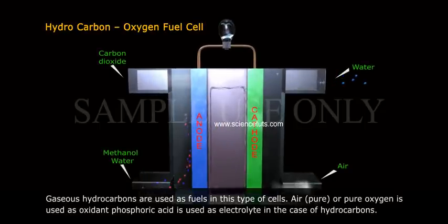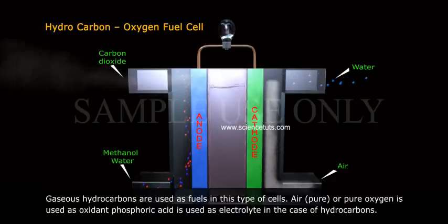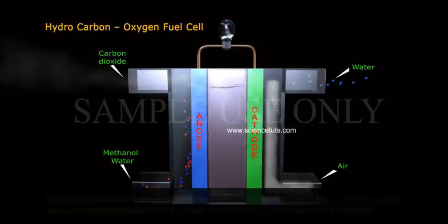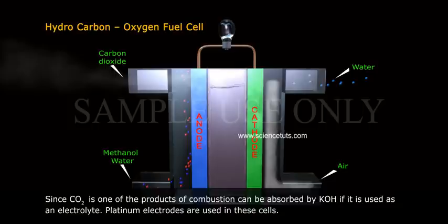B. Hydrocarbon-oxygen fuel cell: Gaseous hydrocarbons are used as fuels. Air or pure oxygen is used as oxidant, and phosphoric acid is used as electrolyte. Since CO2 (carbon dioxide) is one of the products of combustion, it can be absorbed by KOH (potassium hydroxide) if that is used as electrolyte. Platinum electrodes are used in these cells.